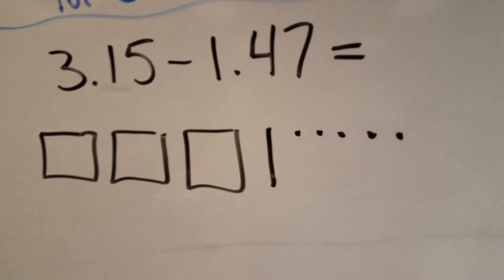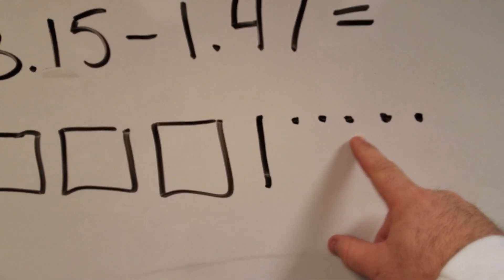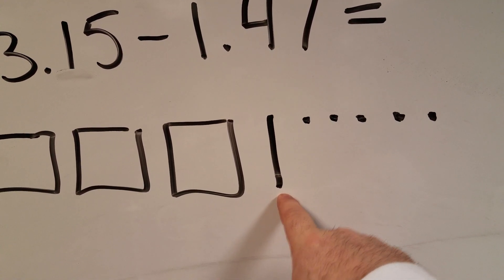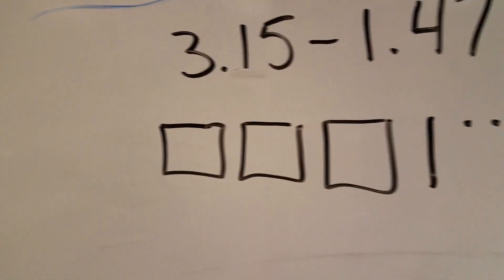So there is just the first part: three and fifteen hundredths, ten, one tenth, five hundredths, one, two, three, four, five, so three and fifteen hundredths.